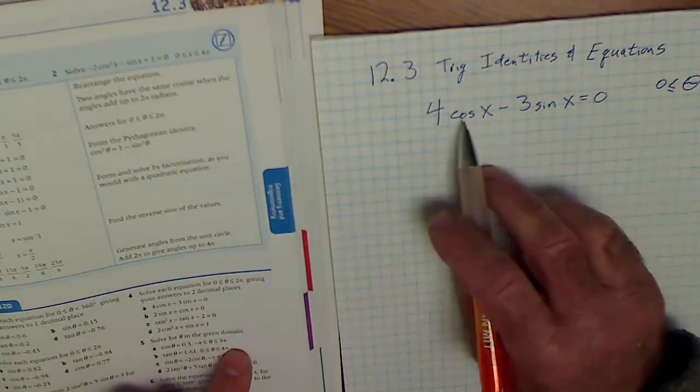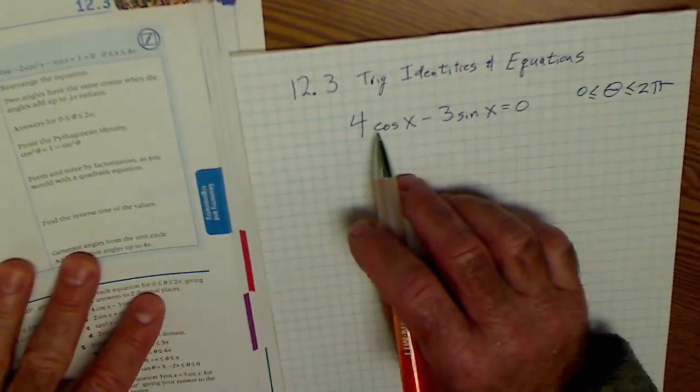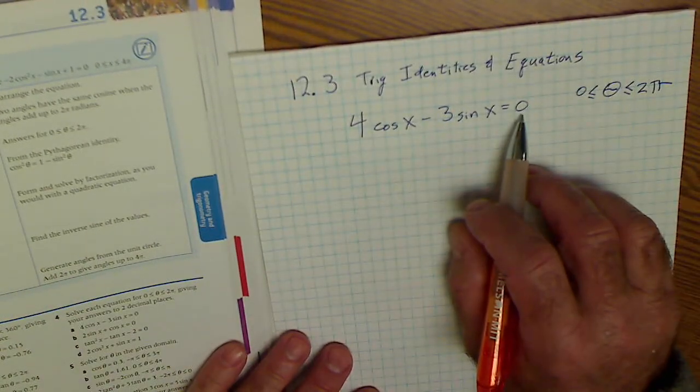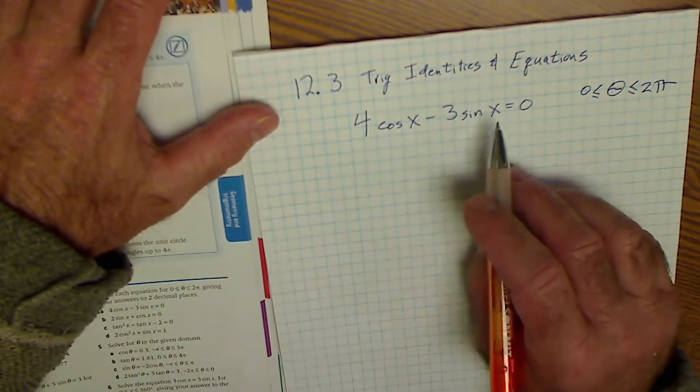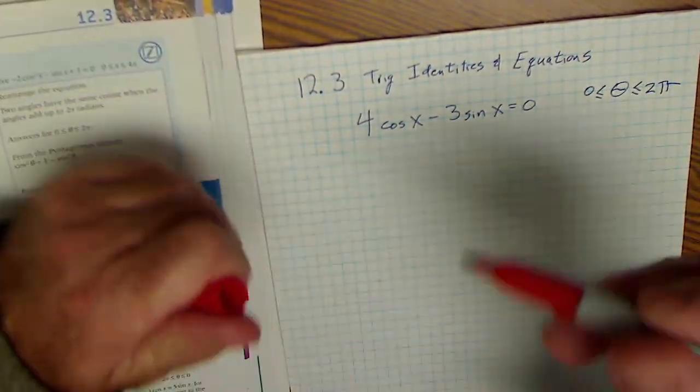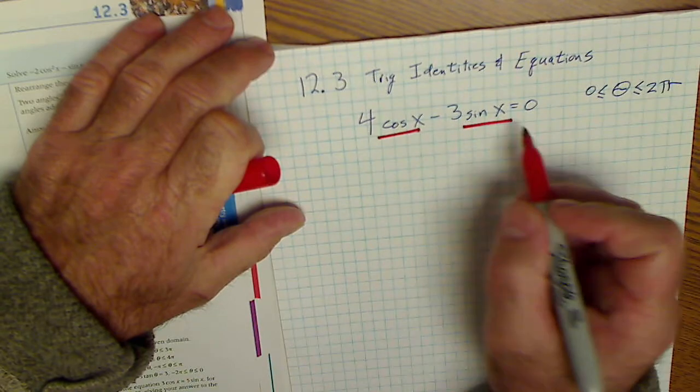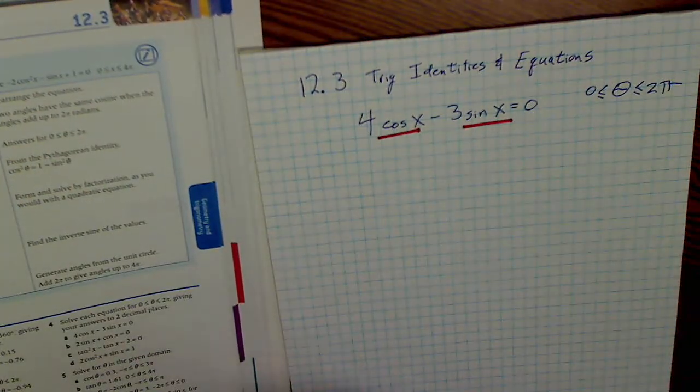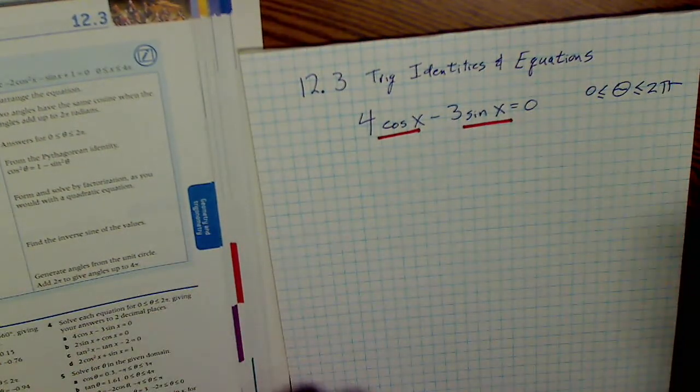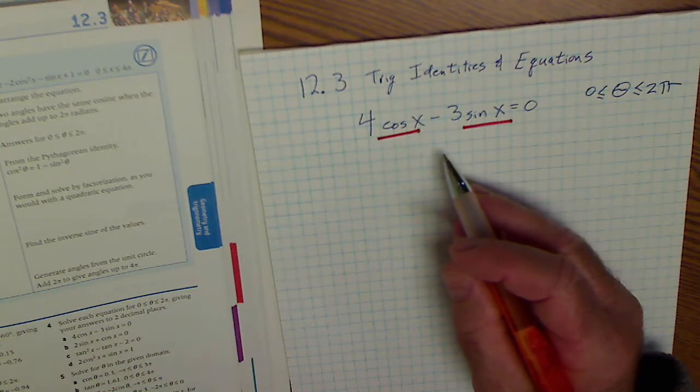Solve for the equation 4 cosine of x minus 3 sine of x equals 0. This is a multiple argument problem, meaning that there is both a cosine and a sine. So I have to use all of my algebra skills and all my trig skills for a problem like this.